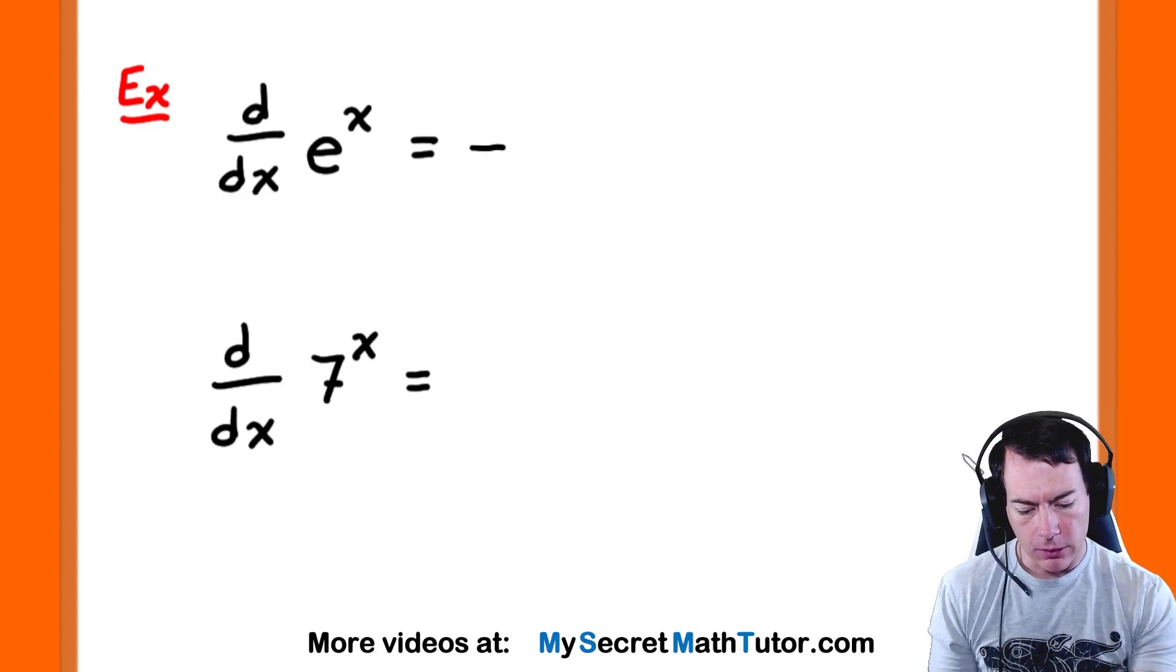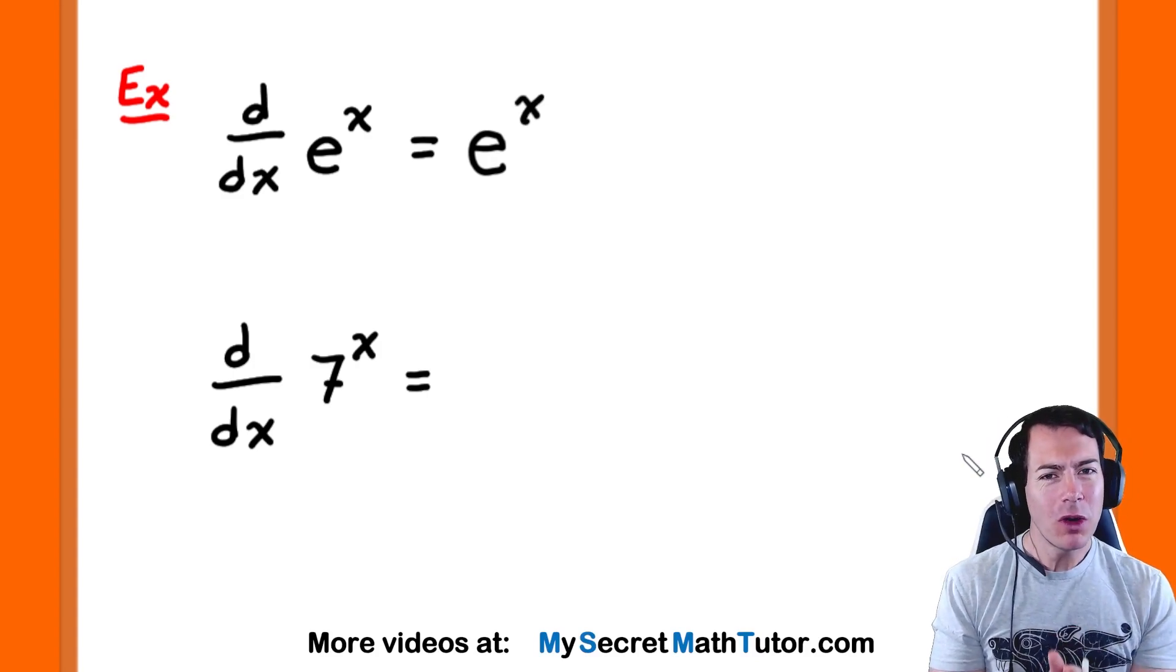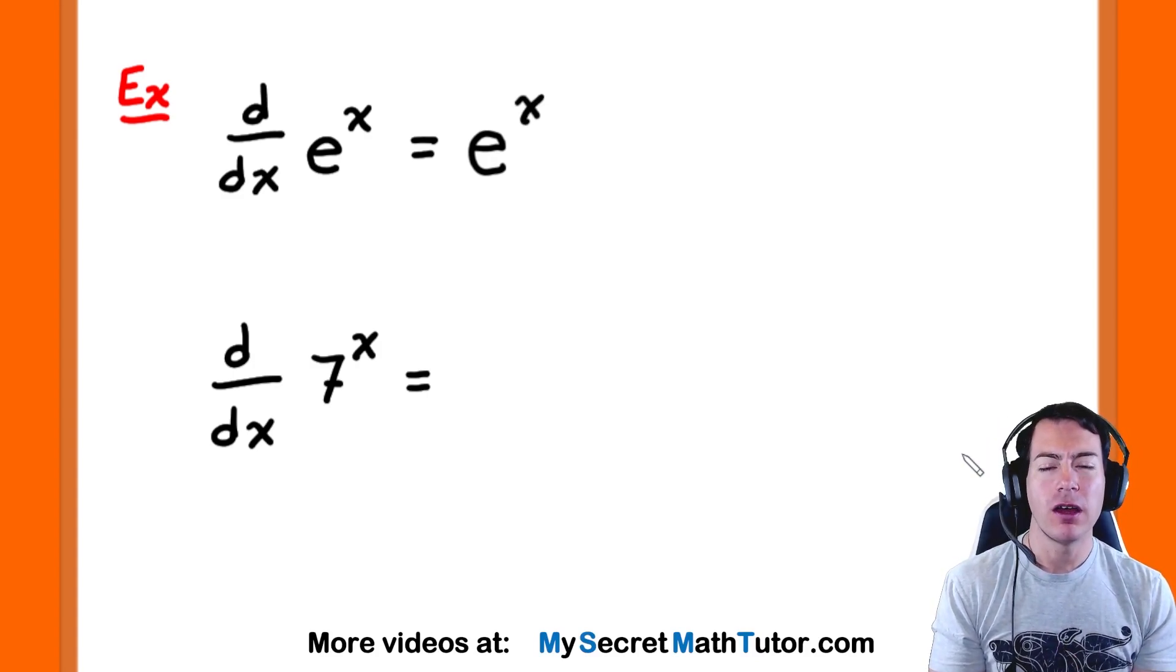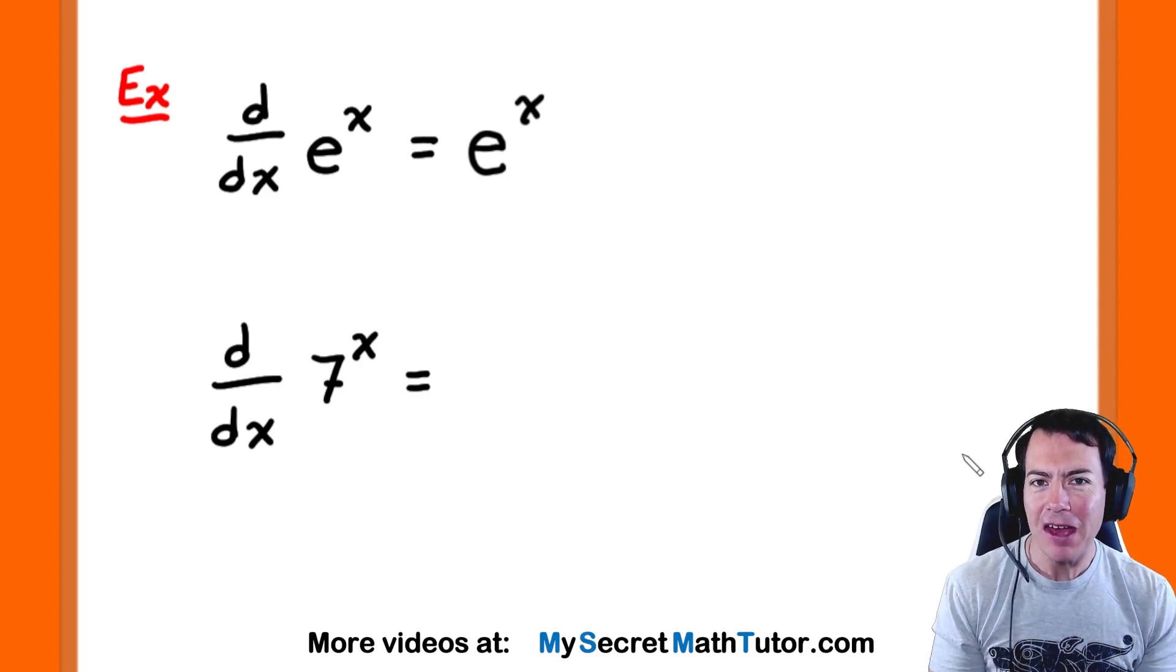And in case you didn't remember, the derivative of something like e to the x really is just e to the x. So you want to keep that in mind when taking the derivative of your other exponential functions if they have a different base.